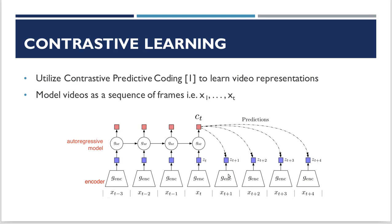The way we use contrastive learning is through contrastive predictive coding, which is a variant of contrastive learning. The idea is that we model videos as a sequence of frames, and based on the past, we predict the future.